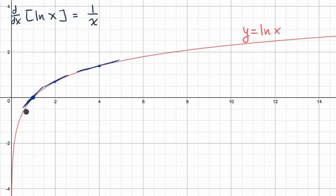And you could even go to values less than 1. Right over here, when x is equal to 1/2, one over 1/2, the slope should be 2. And it does indeed look like the slope is 2 over there.